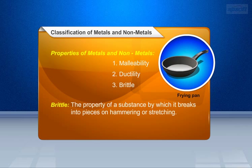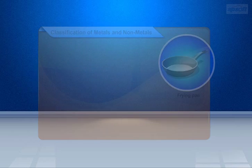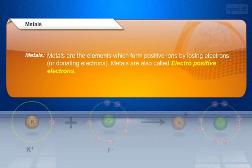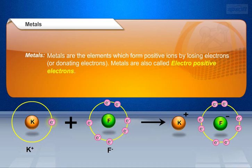What is meant by brittle? The property of a substance by which it breaks into pieces on hammering or stretching. Metals are the elements which form positive ions by losing or donating electrons. These are also known as electropositive elements.